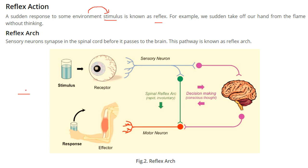This is the reflex arc — basically a pathway. We have the brain in our head, then we have the spinal cord. Sensory nerves connect here and then go to the brain. The sensory neuron synapses at the spinal cord before it passes to the brain. This pathway is known as the reflex arc.